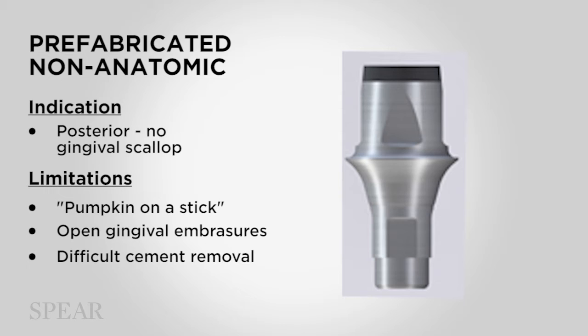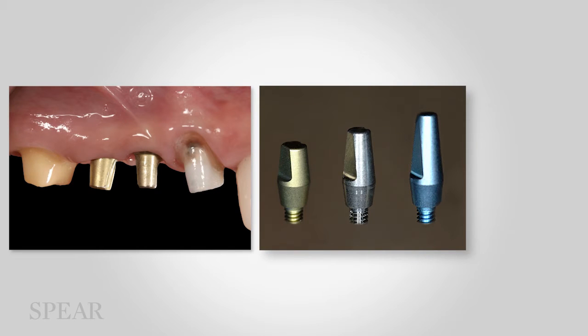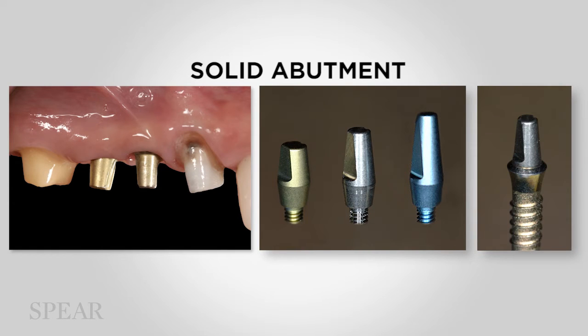The other big problem is cleaning the cement after we've cemented a restoration on top. These abutments tend to be either too shallow or too deep. If they're too deep, we have a hard time getting apical enough with our instruments to clean the cement. Too shallow, there's obviously an aesthetic problem. The classic stock abutment is the solid abutment in the Straumann tissue level system — a really solid implant and abutment with very few reports of loosening or breaking. In terms of durability, this system is great. It works with a Straumann tissue level implant, which must be placed so we have access to the cement margin to enhance cement cleanup.